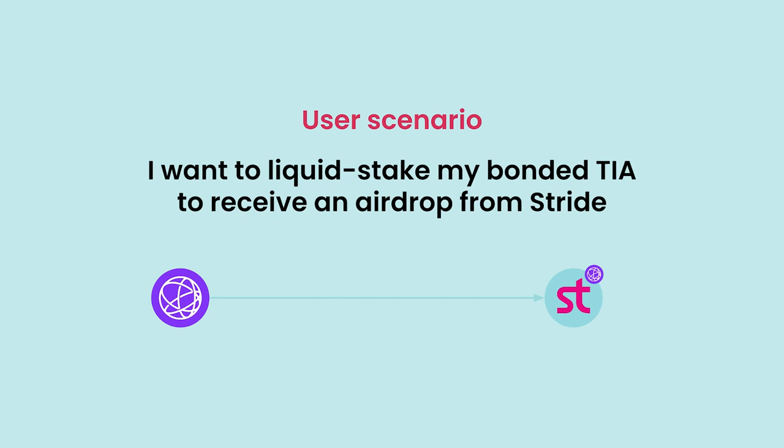Let's take a simple user scenario. Pick a random name for a degen — let's say Zucky. He would want to take some staked TIA that he got into at the beginning of the launch of the Celestia platform. Now Stride is offering an airdrop with liquid staked TIA, so he wants to take that, unbond it, move it across, and do whatever he needs to do to participate in this Stride airdrop — he wants to increase his yield. And literally tens of millions of dollars flowed into people now needing this solution.